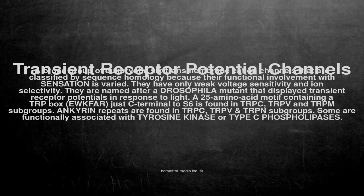ANKYRIN repeats are found in TRPC, TRPV, and TRPN subgroups. Some TRP channels are functionally associated with tyrosine kinase or type C phospholipases.